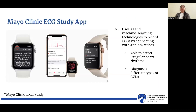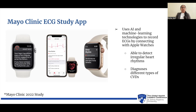The Mayo Clinic has adopted this technology, developing the Mayo Clinic ECG Study App, which uses AI and machine learning to record ECGs by connecting to Apple Watches. ECGs integrated with AI can detect irregular heart rhythms and diagnose different types of CVDs. This constant AI-generated ECG platform substitutes for the unclear, unreliable self-reporting of symptoms that vary between men and women, ultimately bridging the gap in detecting cardiovascular disease between the sexes. I've implemented this solution in my own community by fundraising to distribute Apple Watches to homeless shelters and hospitals near me through my nonprofit, CardioAssist.